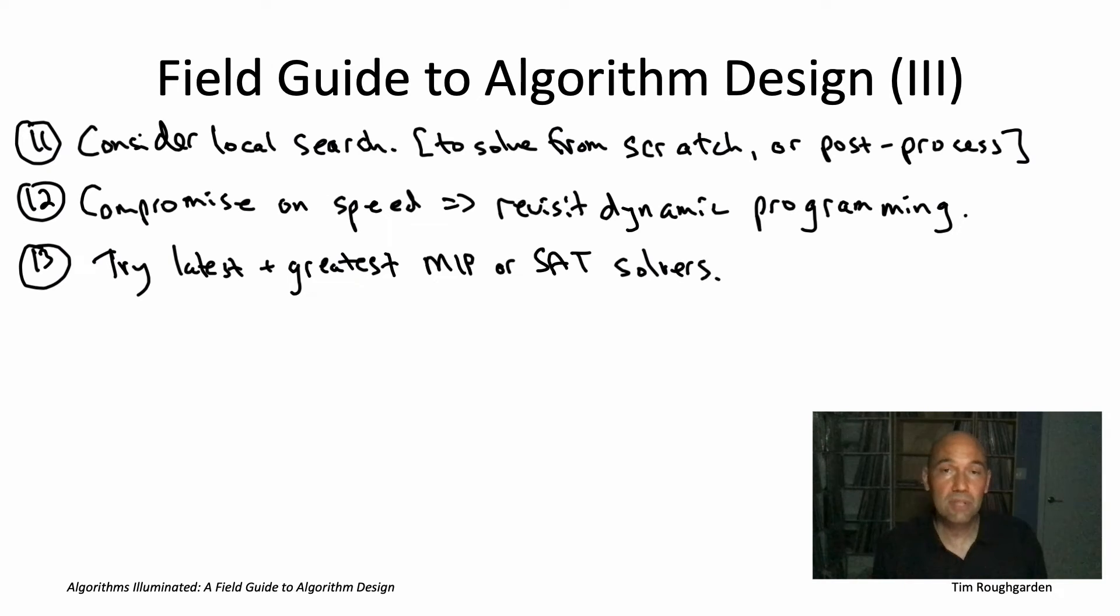That concludes the 13-step checklist that I wanted to tell you about. A checklist that I go through when I'm trying to make sense of a new computational problem that I've been confronted with. Needless to say, this is not gospel. This is just take this as a starting point or a model, if you like. As you develop your experience with algorithms, and as you acquire skills beyond what you've learned in this book series, you'll of course want to develop your own personalized recipe. And that, my friends, is the end of our journey. At least for now. And concludes the Algorithms Illuminated book series.